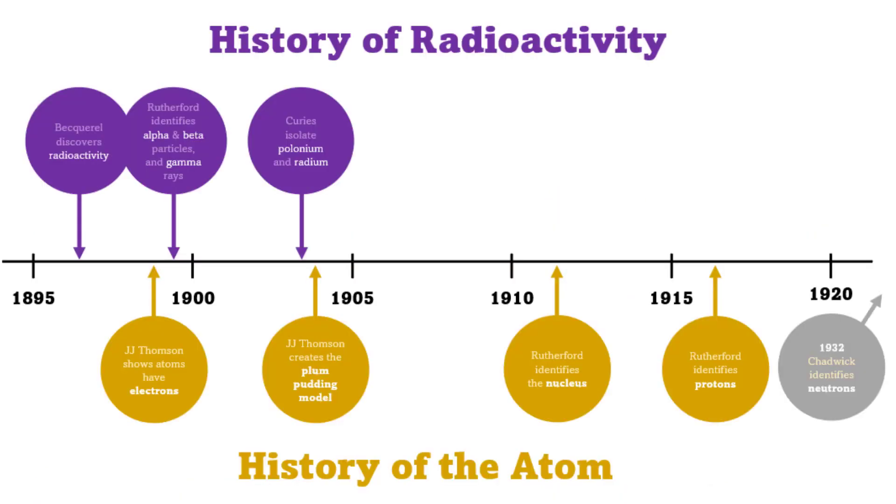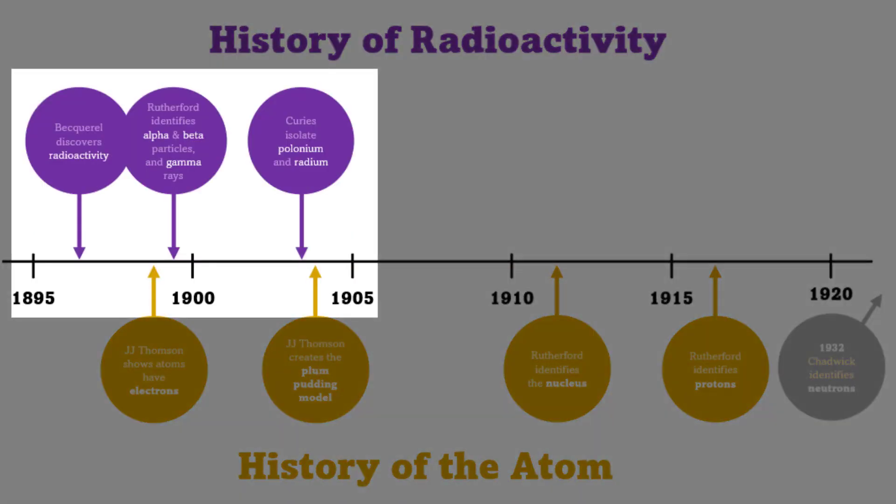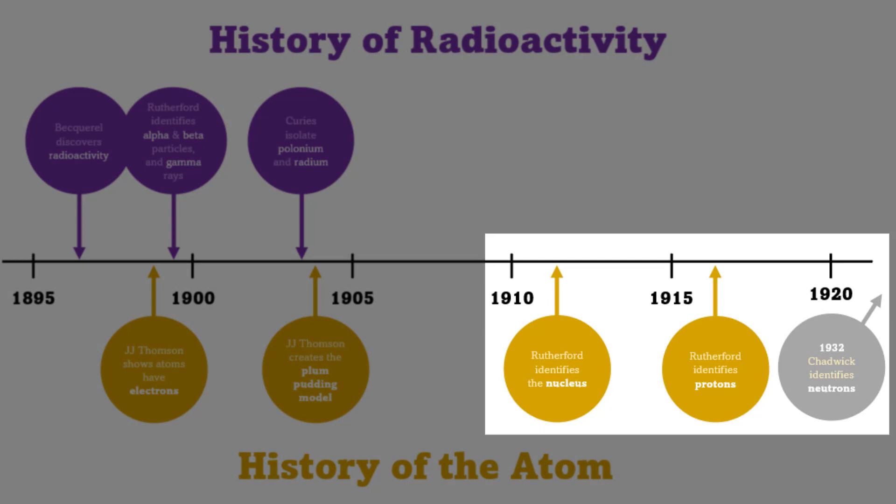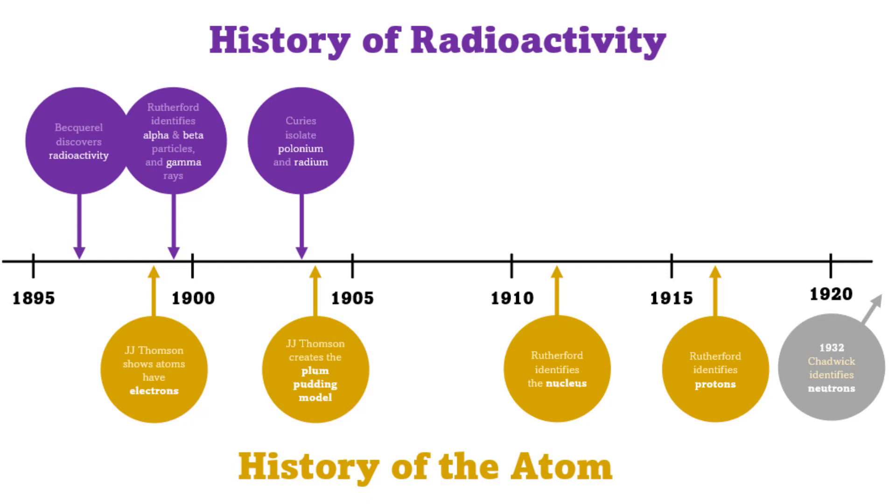As you can see from these two timelines, all the early discoveries about radioactivity were made before scientists had developed our modern picture of the atom, one with a nucleus at its center made of protons and neutrons. In fact, scientists could only investigate the structure of the atom using the radiation it produced. So it was a bit of a chicken and egg situation.